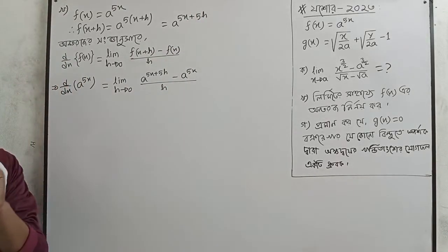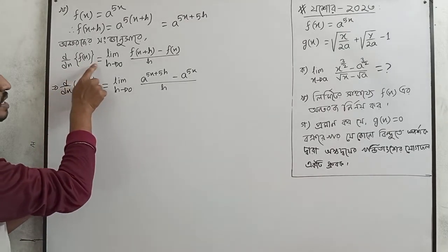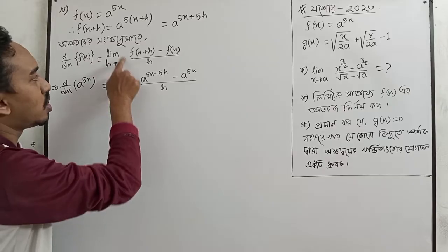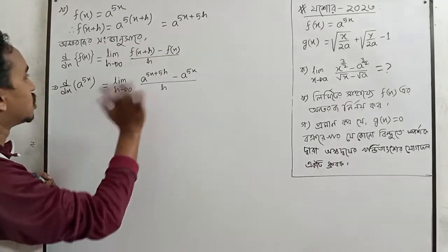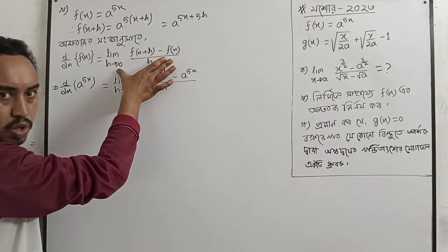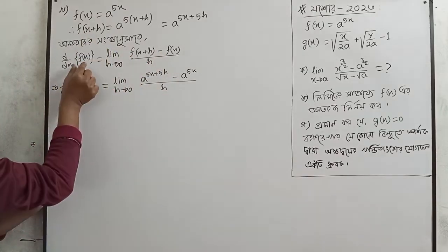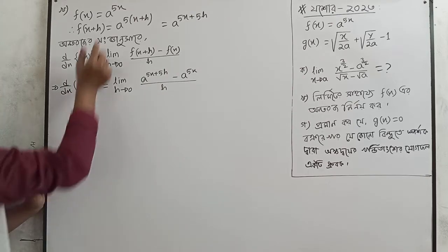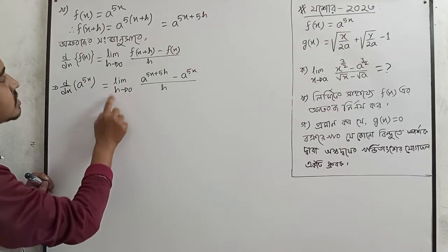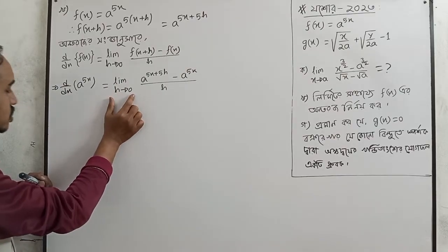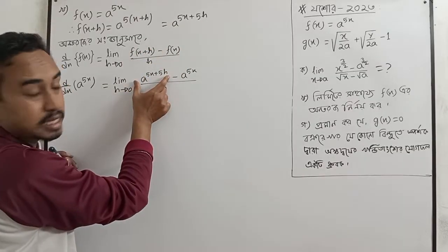The answer is: d by dx of f of x equals limit h tends to 0 of f of x plus h minus f of x divided by h. So this is the answer. Now d by dx of f of x, where f of x equals a to the power 5x, equals limit h tends to 0 of f of x plus h minus f of x divided by h.